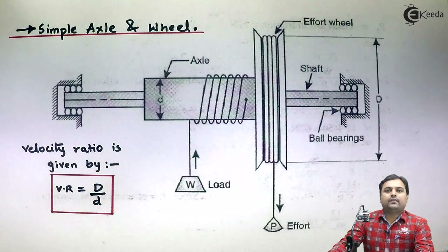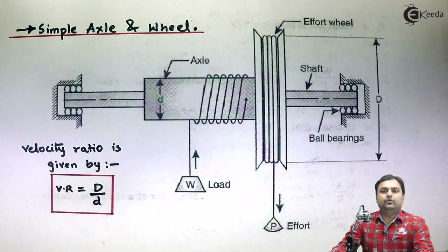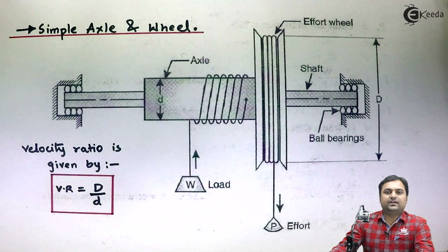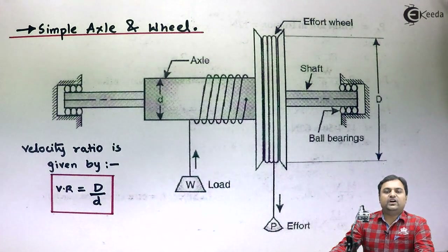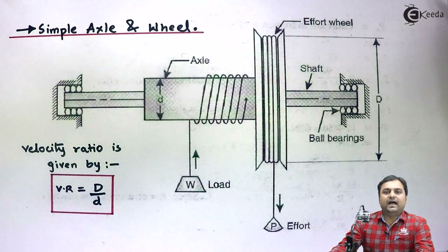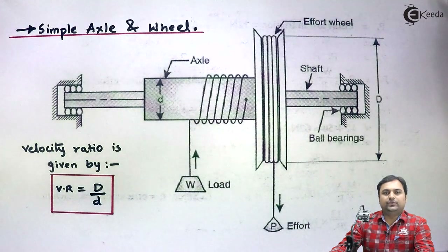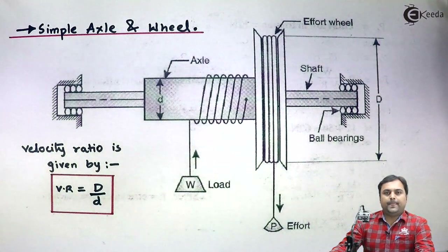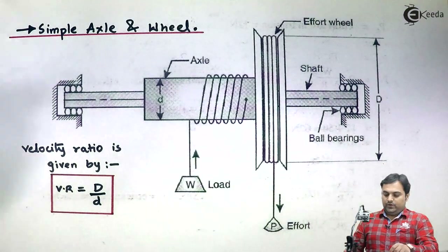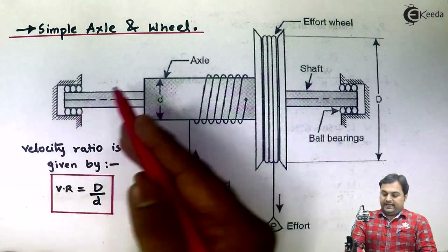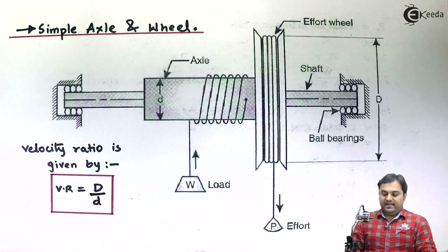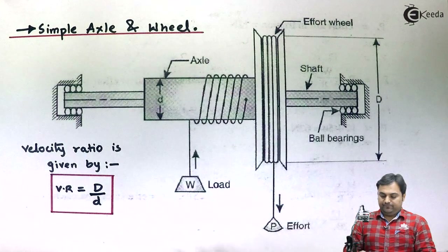Hello friends, in this video we will see the construction and working of a simple machine called the simple axle and wheel, along with its velocity ratio formula. Here is the diagram of a simple axle and wheel.